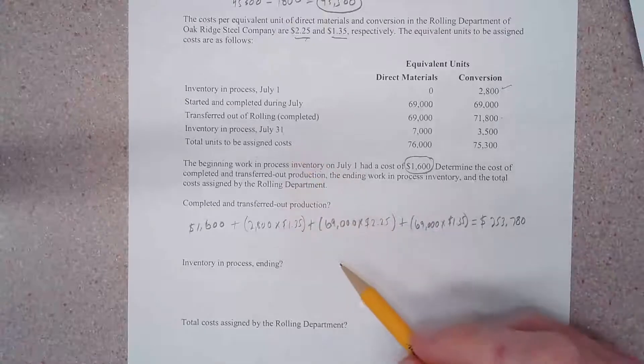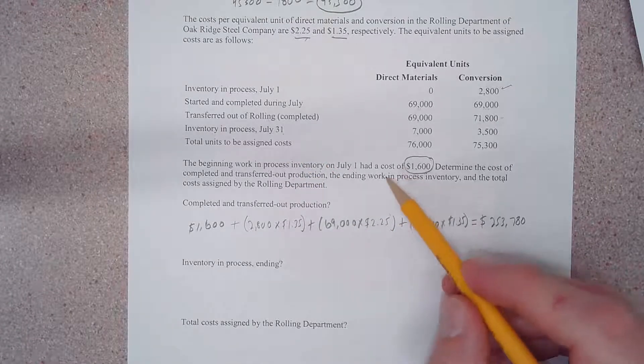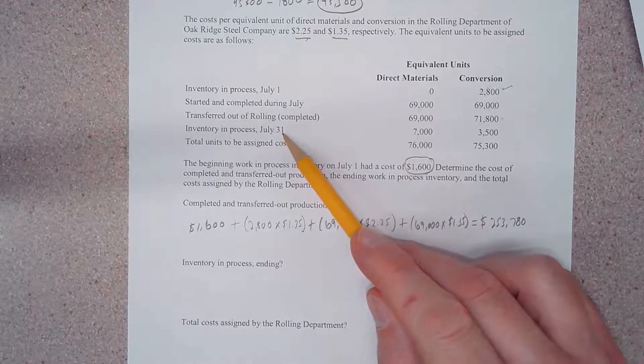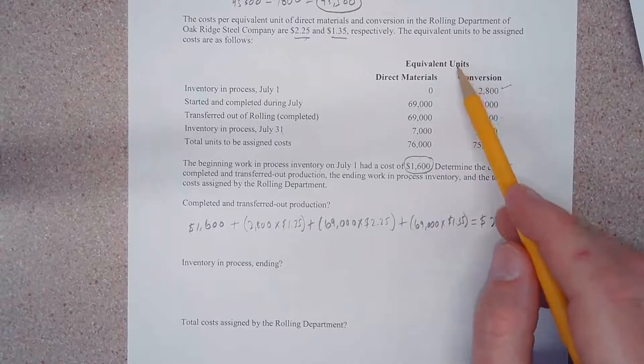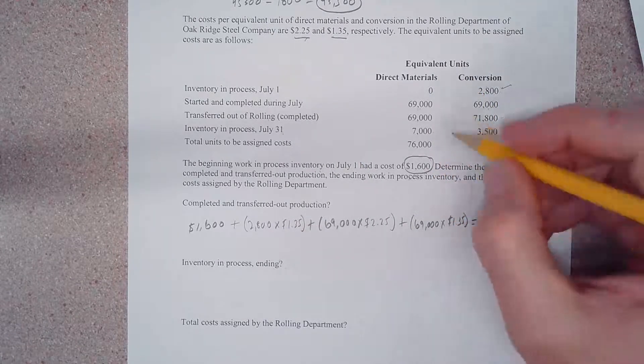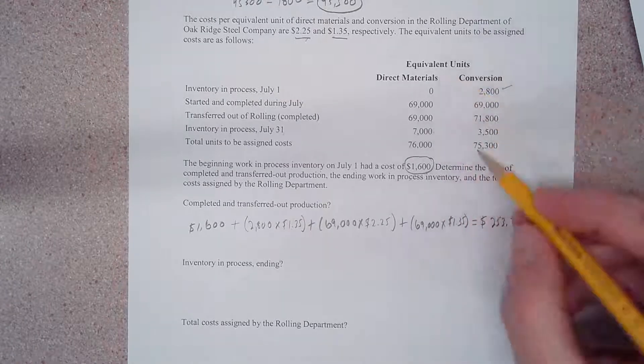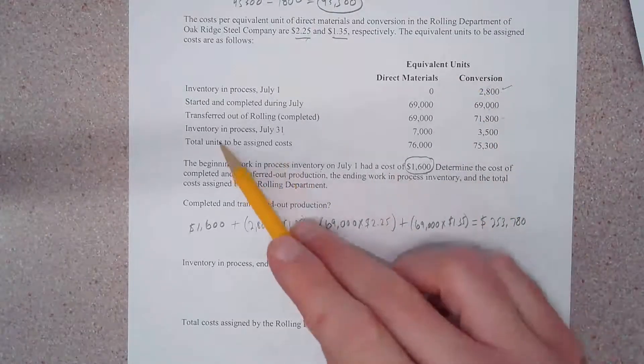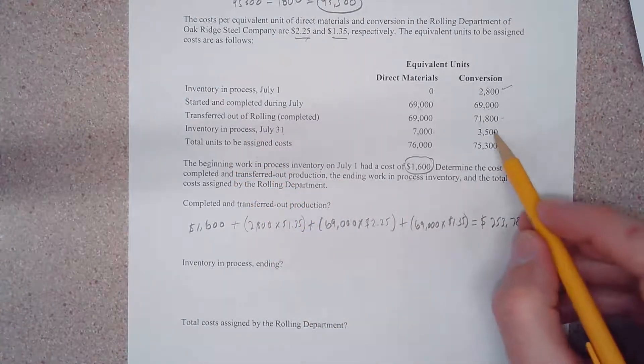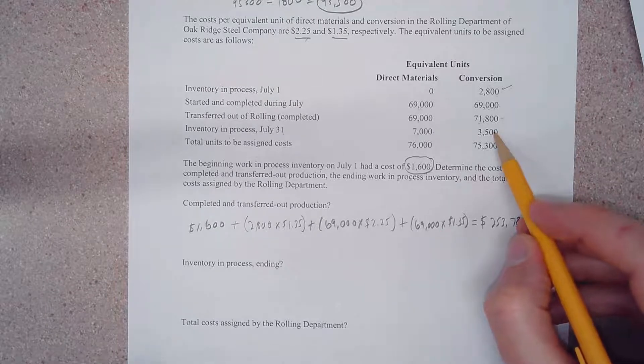So all we have to do is say, okay, our inventory in process as of July 1st - equivalent units, that's what we've been talking about the whole time - is 7,000 equivalent units as pertains to direct materials. And ending inventory in process July 31st is 3,500 units as to conversion cost.